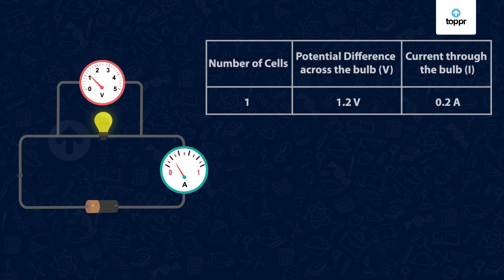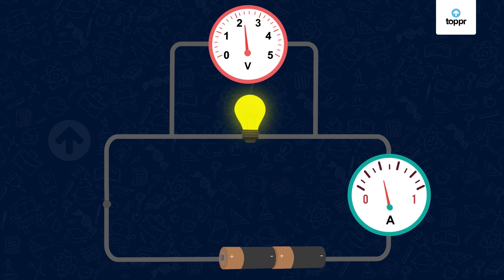Let's tabulate the observations. Now, we'll add another cell and observe the readings. We now have two cells instead of one. So, should the voltage increase two times here?